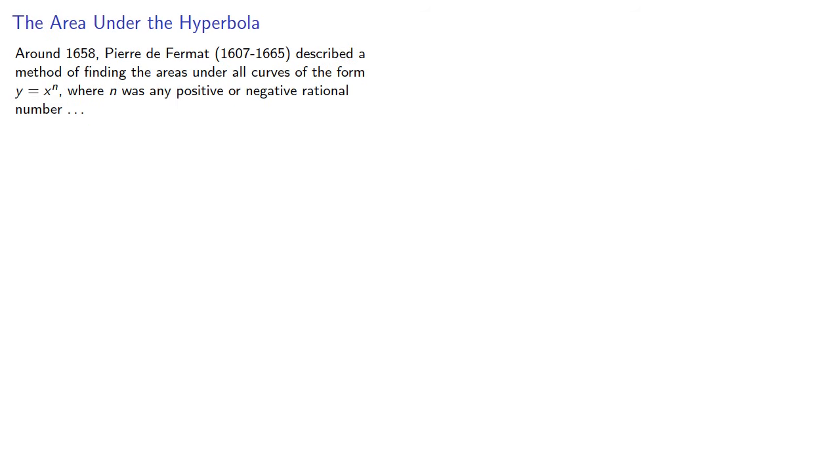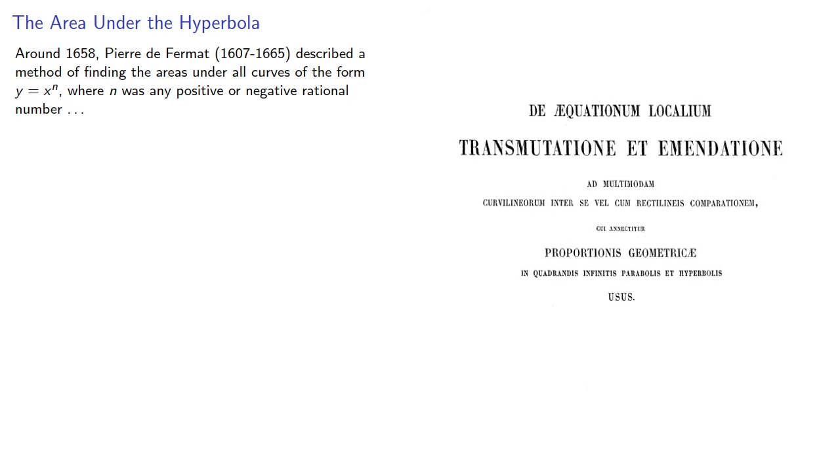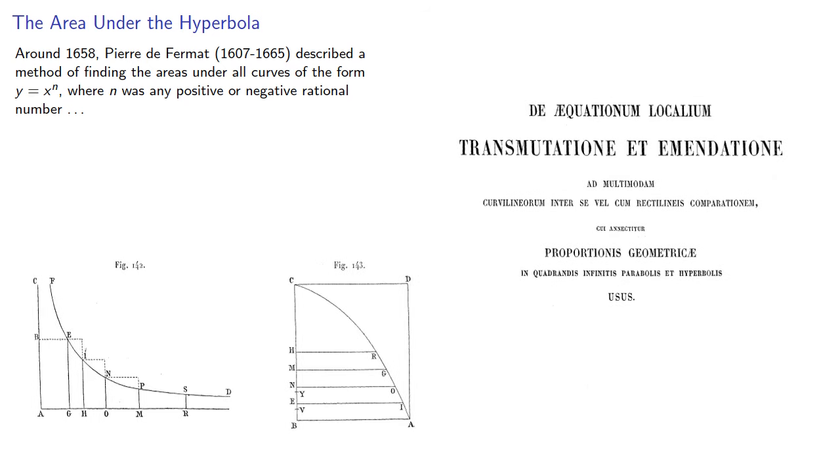Around 1658, Pierre de Fermat described a method of finding the areas under all curves of the form y equals x to the n, where n was any positive or negative rational number, except for n equals negative 1.